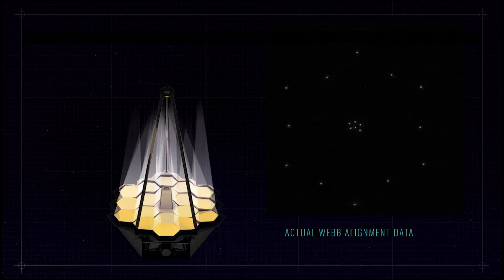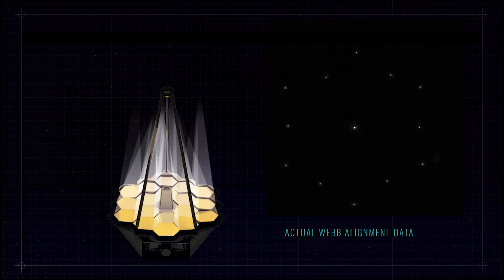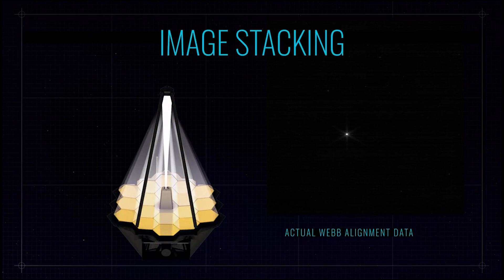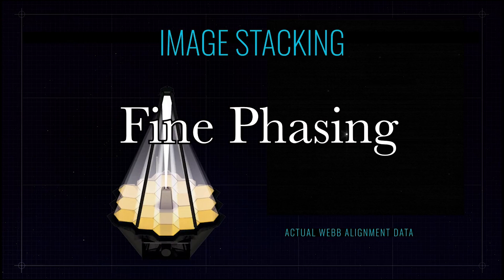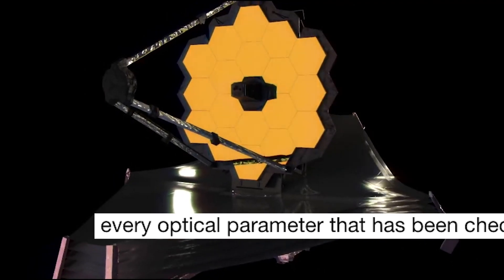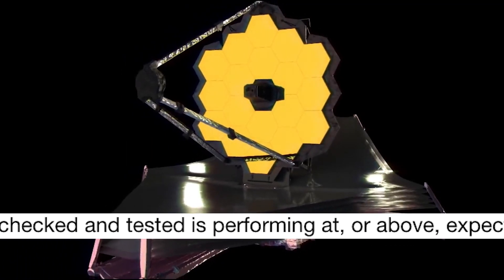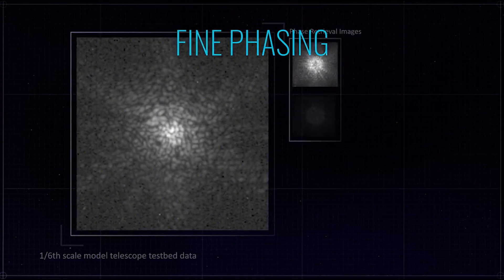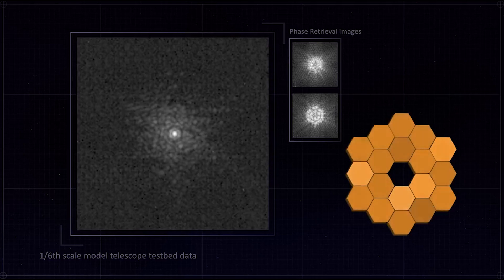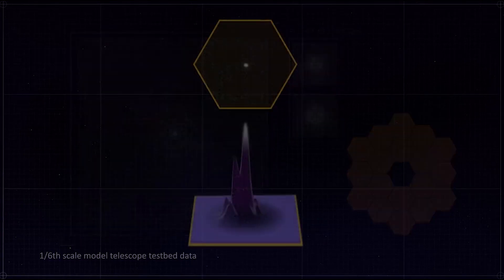It's basically the culmination of the alignment process of Webb's primary mirror. It started out as 18 scattered dots, each dot being a separate reflection of the same star. But now those same dots have been rearranged, stacked and fine-tuned. This process is known as fine-phasing and according to NASA it was a total success with every optical parameter that has been checked and tested performing at or above the expected level. Right now the telescope is able to successfully gather light from distant objects and deliver it to its instruments without any issues.